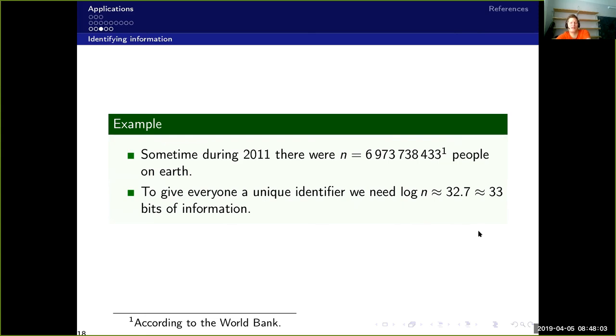Well, actually, if we add one more bit, that doubles it. So if we are, as long as we are less than 13, 14 billion people, 34 bits would be sufficient for this identifying.